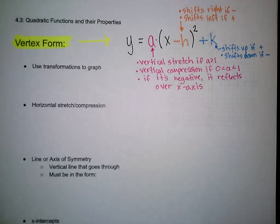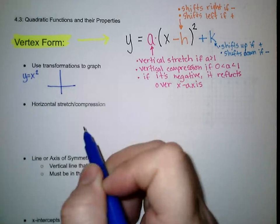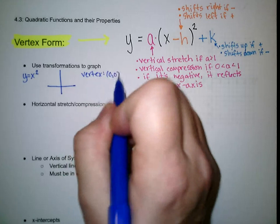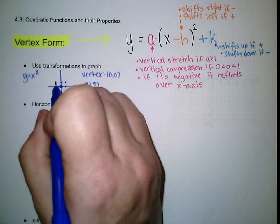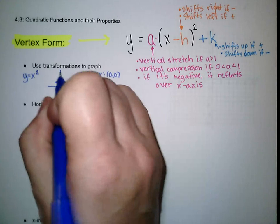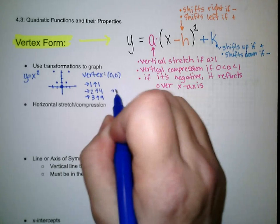We're going to use these transformations to graph. Our parent function for the quadratic family, y equals x squared, has a vertex at 0, 0. From that vertex, the pattern to graph is to go over 1, up 1 on both sides, and then over 2, up 4 on both sides. Then we would go over 3, up 9, and that pattern continues — over 4, up 16; over 5, up 25; and so on.